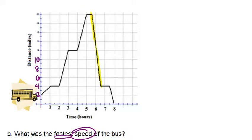It goes from 20 up at the top, 20 miles away, down to four miles away in just one hour, from 5.5 hours to 6.5 hours. So the slope is negative 16, which means the speed is 16 miles per hour. So the fastest speed is 16 miles per hour.